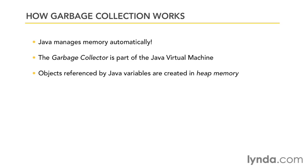When you create a variable that references a complex object, the object itself is stored in an area of memory called heap memory. There are two types of memory: stack and heap.